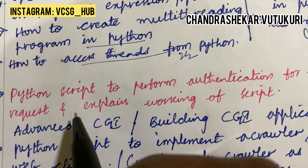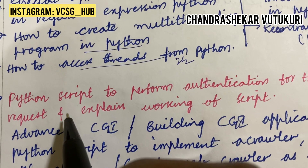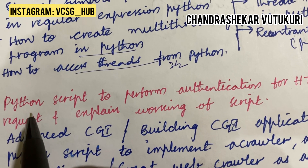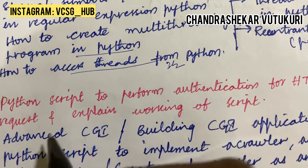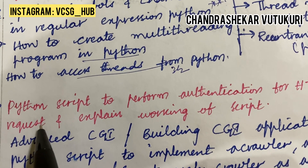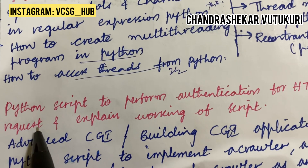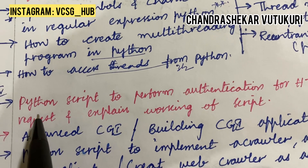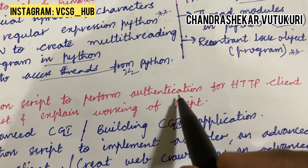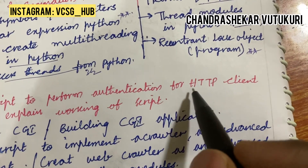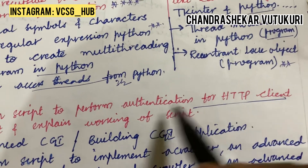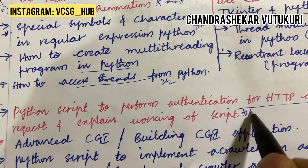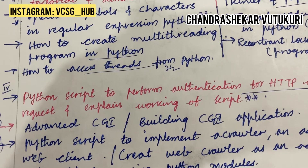You are liking my videos and most of the questions were covered. Python script to perform authentication for an HTTP client is said to be a gunshot question, and explain the working of the script is said to be a topmost question. If asked for direct 10 marks, advanced CGI and building CGI application.